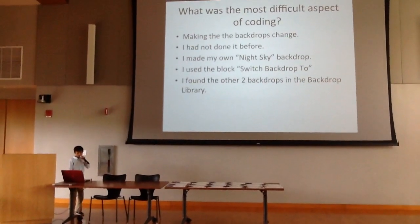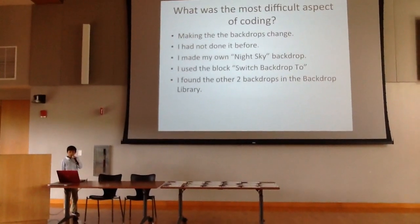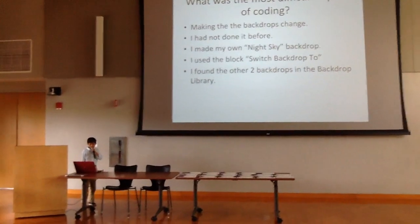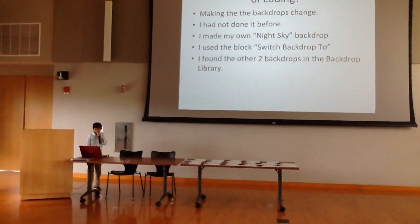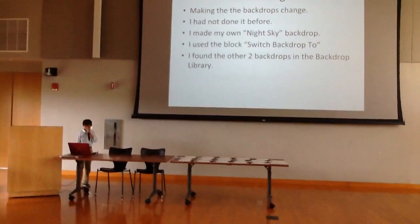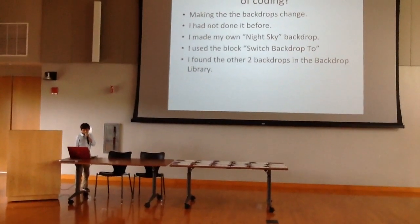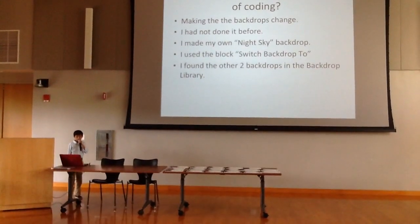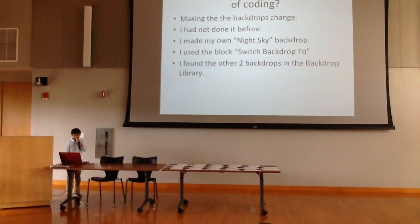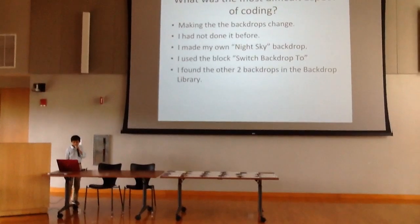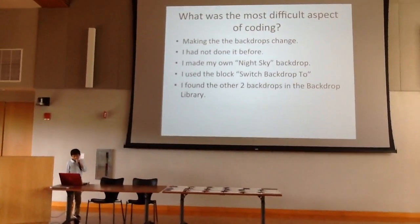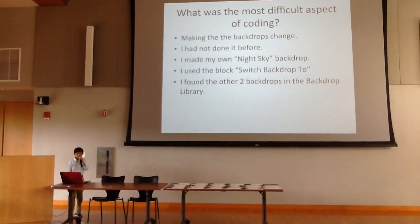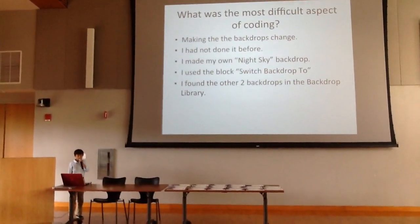What was the most difficult aspect of coding? Making the backdrops change. I made my own night sky backdrop — I bucketed a blank sheet black and added white dots and stars. I used the block switch backdrop to when I wanted to switch the backdrop. I found the other two backdrops in the backdrop library. For these reasons, this is my favorite game I've made so far.